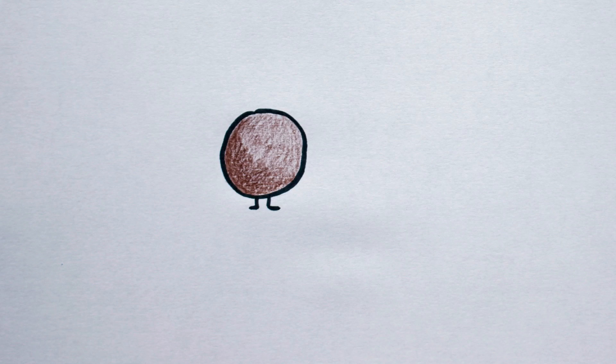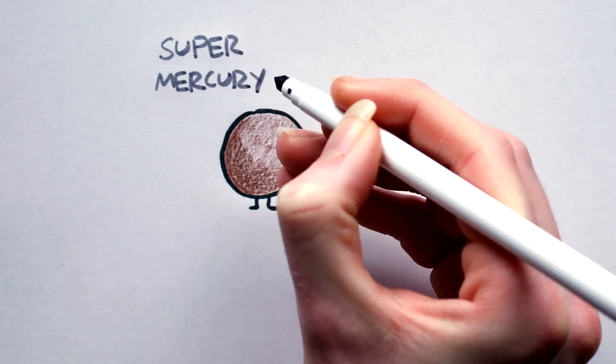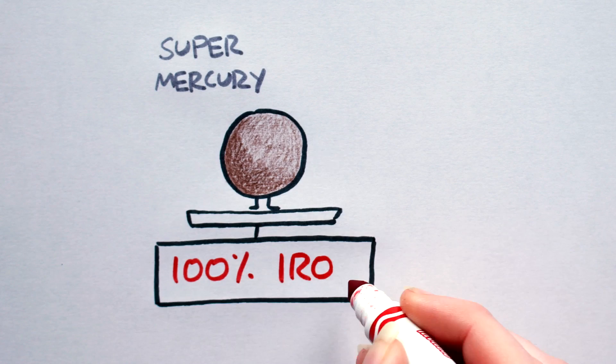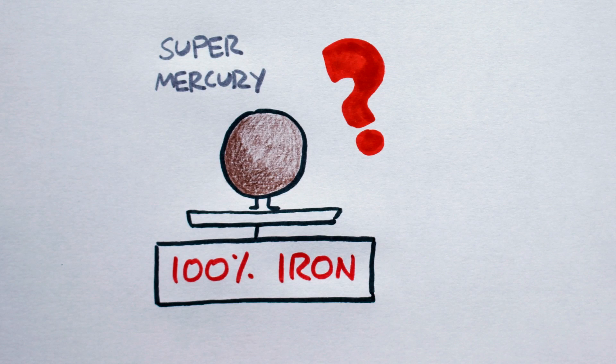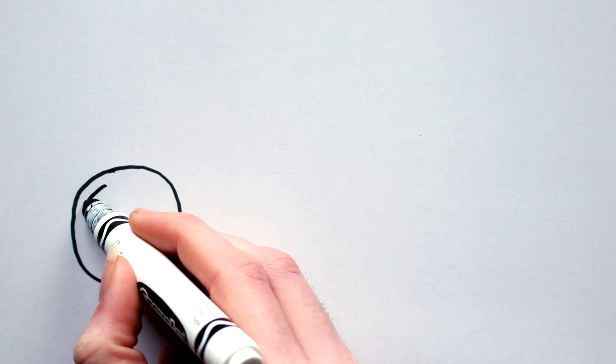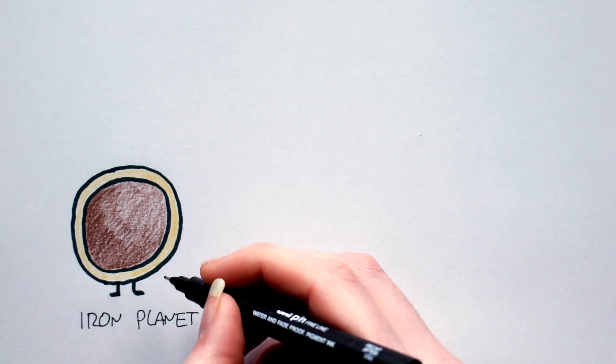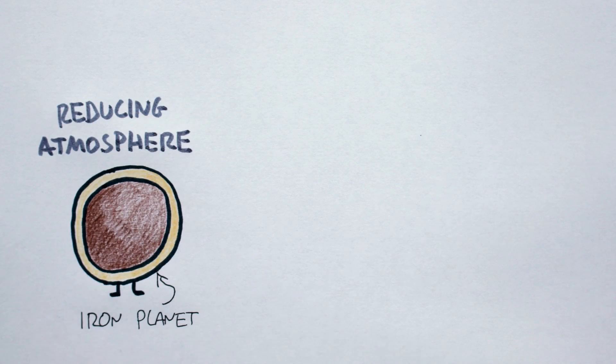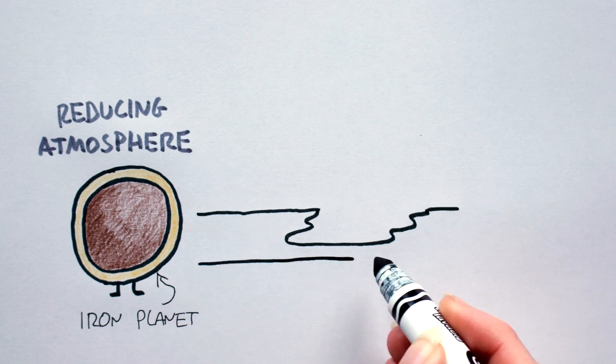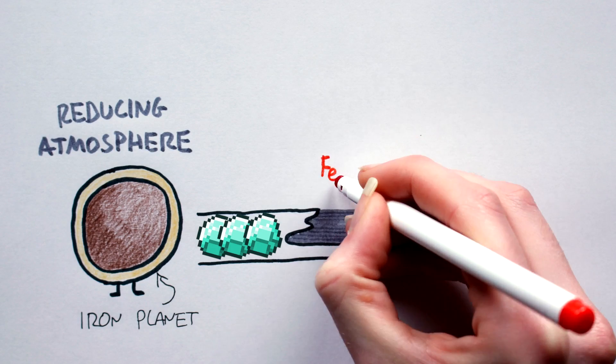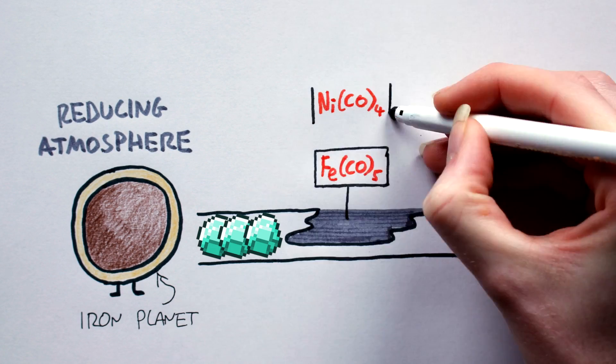Now, we may one day find true Iron planets, or Super-Mercuries, whose iron content approaches 100%. For now, all we can do is speculate as to what such worlds would look like. It's likely that the abundance of metallic iron on an Iron planet will lead to a chemically reducing environment, possibly giving rise to fields of diamonds and lakes and oceans of iron and nickel carbonyl.